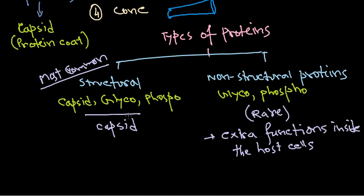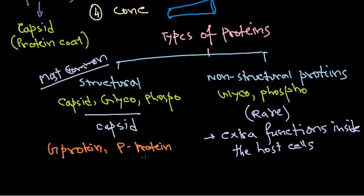The nomenclature of virus proteins is not that well-defined, because you can find different types of proteins named differently. You can find G protein and P protein, and so on. G protein is usually termed for glycoproteins, and P proteins are for the naming of phosphoproteins. But there is no hard and fast rule for the nomenclature of proteins in viruses.